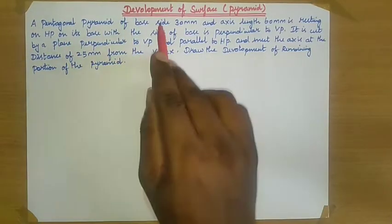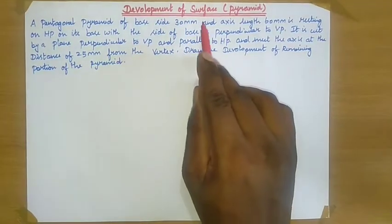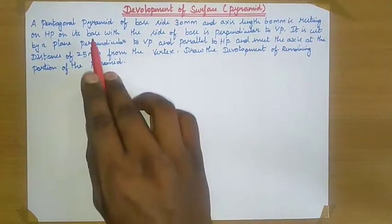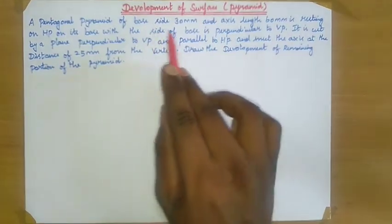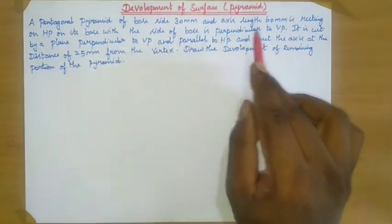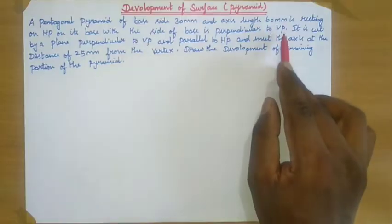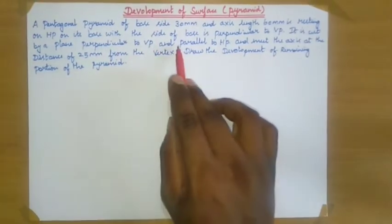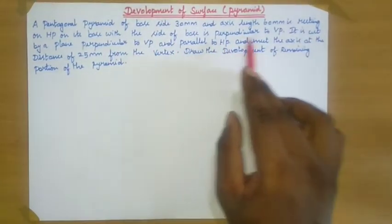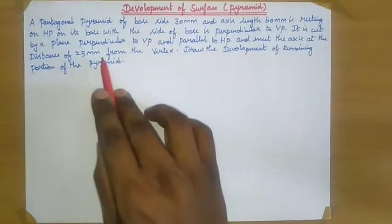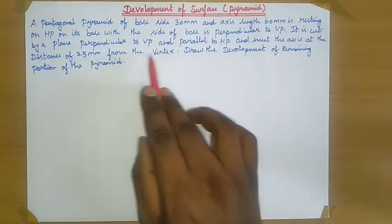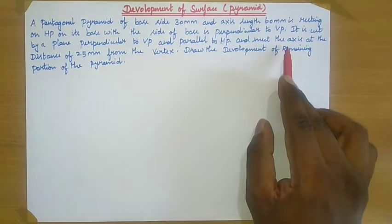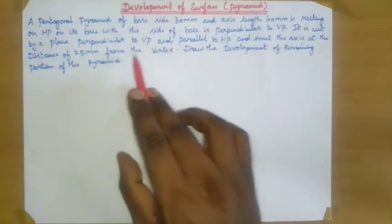A pentagonal pyramid of base side 30 mm and axis length 60 mm is resting on HP on its base, with the side of base perpendicular to VP. It is cut by a plane perpendicular to VP and parallel to HP, and meets the axis at a distance of 25 mm from the vertex. Draw the development of the remaining portion of the pyramid.